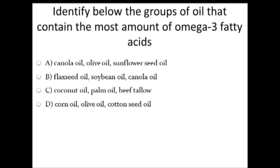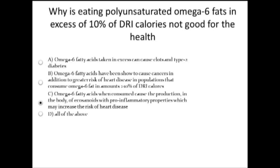The next question: identify the groups of oil that contain the most amount of omega-3 fatty acids. The correct answer is B — flaxseed oil, soybean oil, and canola oil. The next question: why is eating polyunsaturated omega-6 fats in excess of 10% of DRI calories not good for health? The correct answer is C: omega-6 fatty acids, when consumed in excess, cause the production in the body of eicosanoids, which are pro-inflammatory agents that may increase the risk of heart disease.